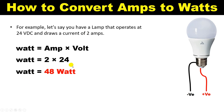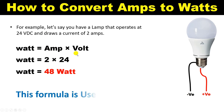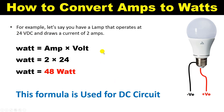You can notice one thing here: if you want to convert ampere into watt, you must also know the voltage. Without knowing the voltage, you cannot directly convert ampere into watt. This formula — Watt = Ampere × Voltage — is used for DC power supply. So if a question is asked for DC power supply, you can use this formula to find the answer.